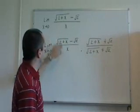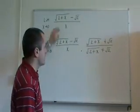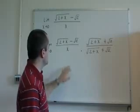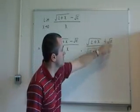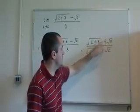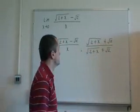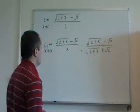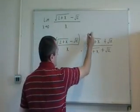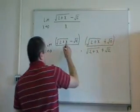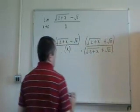So this looks very different than the original problem. But if you think about it, all I've really done is multiply the original problem by 1, because this divided by this is simply 1. So what I want to do is multiply this by this, and this by this.